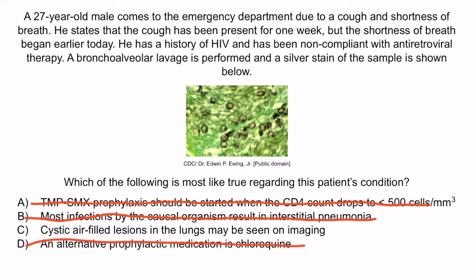So again, the correct answer is C: cystic air-filled lesions in the lungs may be seen on imaging. And with that, we've covered everything you need to know regarding Pneumocystis jirovecii.